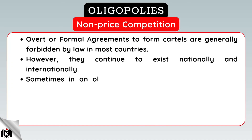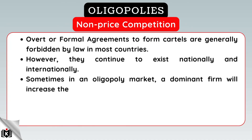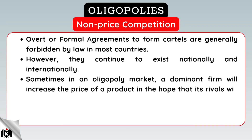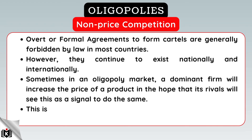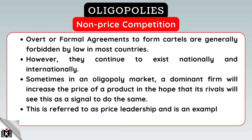Sometimes in an oligopoly market, a dominant firm will increase the price of a product in the hope that its rivals will see this as a signal to do the same. This is referred to as price leadership and is an example of tacit collusion.